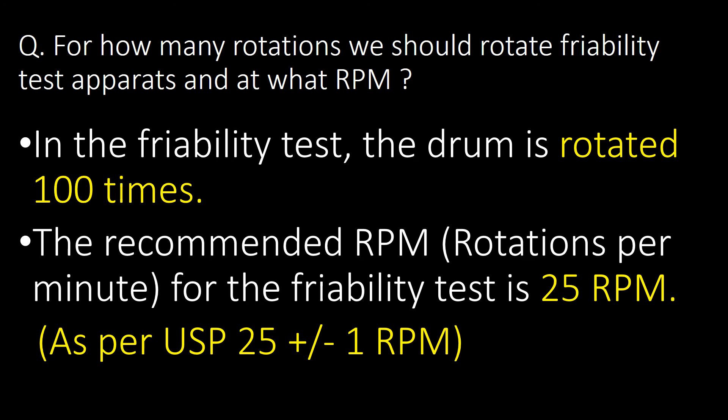For how many rotations should we rotate the friability test apparatus and at what RPM? In the friability test, the drum is rotated 100 times. The recommended RPM for the friability test is 25 RPM. As per USP, the acceptance criteria for rotation speed is 25 ± 1 RPM.